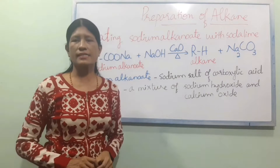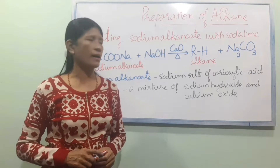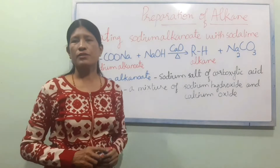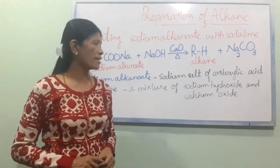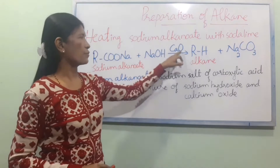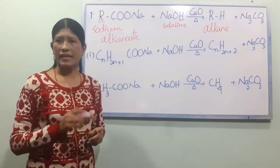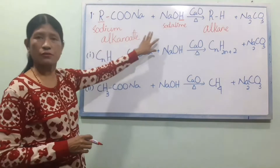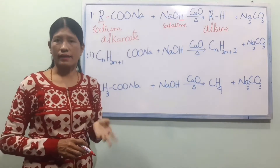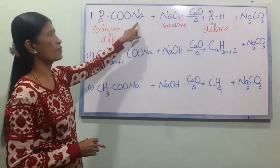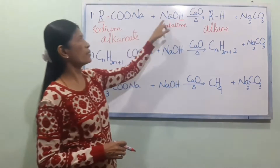The methods of preparation include using NaOH (sodium hydroxide) and CaO (calcium oxide). The reaction involves sodium salt of a carboxylic acid — the formula is RCOO-Na reacted with NaOH and CaO, producing an alkane (RH). The total formula gives us RCOO-Na.